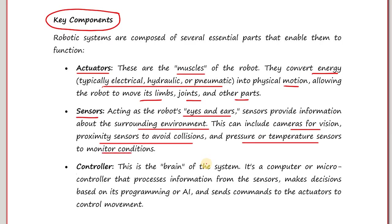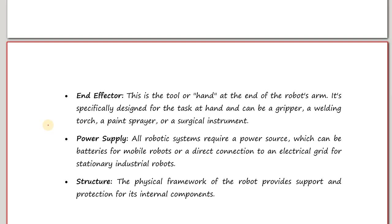Next we have the controller — this is the brain of the system. It is a computer or microcontroller that processes information from the sensors and makes decisions based on its programming or artificial intelligence, and then sends commands to the actuators or muscles to control movement. There are other components as well — the next one is the end effector.